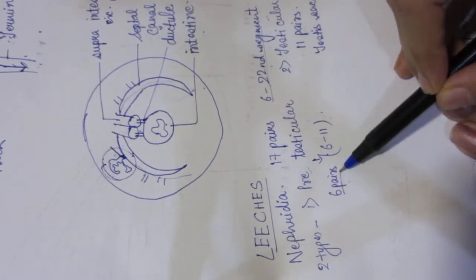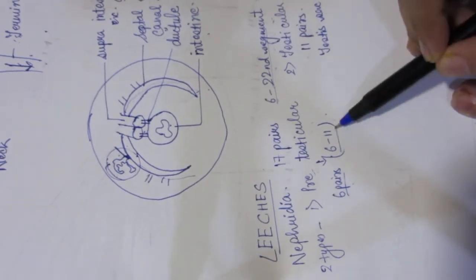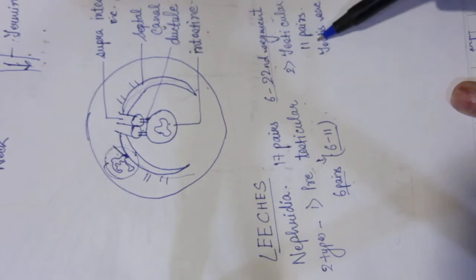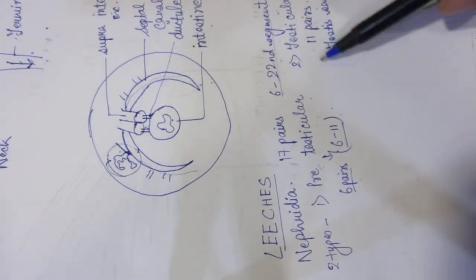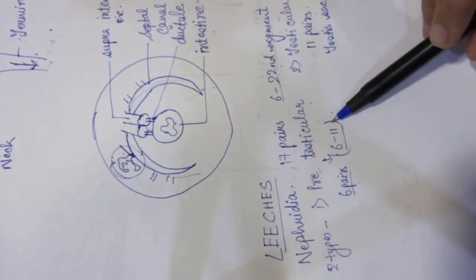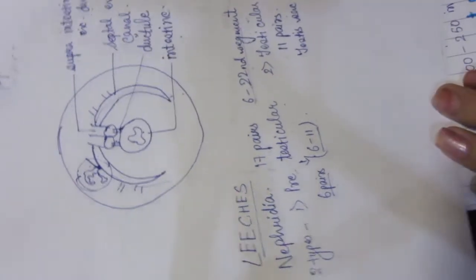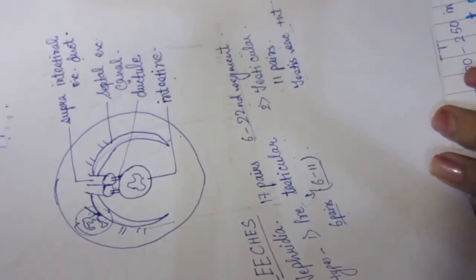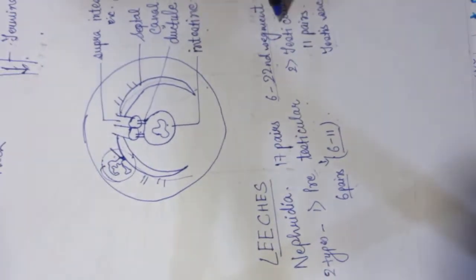So the first 6 pairs (6th to 11th segment) are pre-testicular nephridia. The remaining pairs from the 12th to 22nd segment are testicular nephridia, because testes sacs are present in those segments — hence the name testicular nephridia.